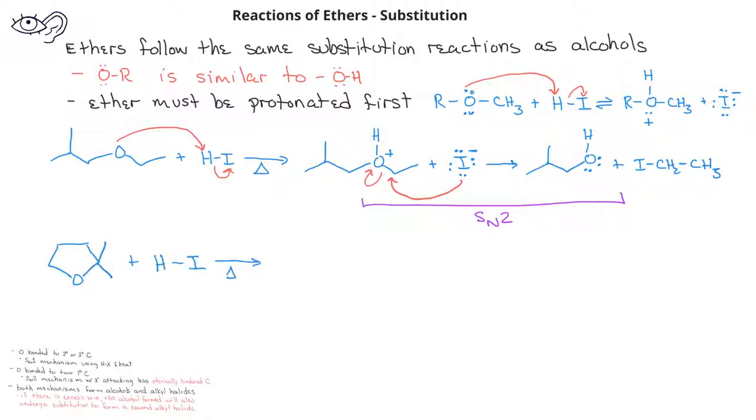In the second example, we have a cyclic ether, and one of the carbons bonded to the oxygen is a tertiary carbon. Since one of the carbons is tertiary, this ether will follow an SN1 mechanism.